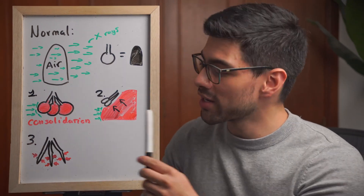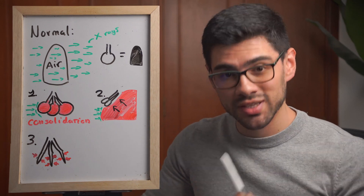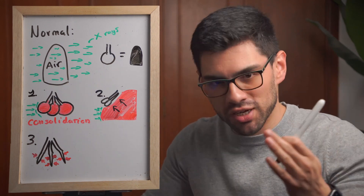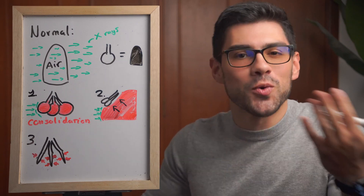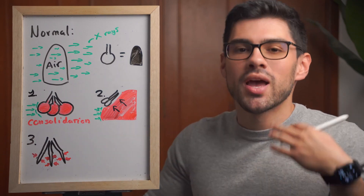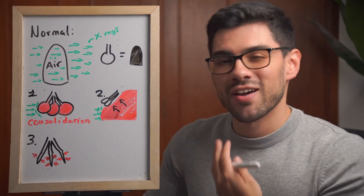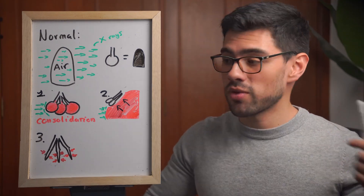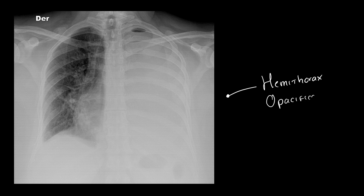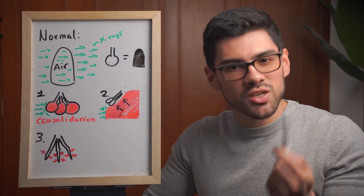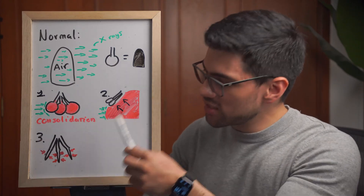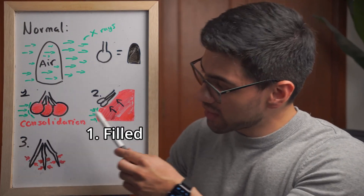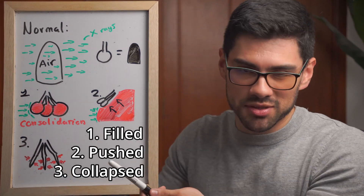The third option is that the alveoli are collapsing or are absent. Here the problem is not that something dense blocked the X-rays — that didn't happen. It's simply that there is no air for the X-rays to pass through, and so we end up with a very similar radiographic result. So when looking at an X-ray with hemithorax opacification — the technical term for a one-sided white lung — we need to figure out which process is occurring: are the alveoli getting filled, getting pushed, or getting collapsed or absent?